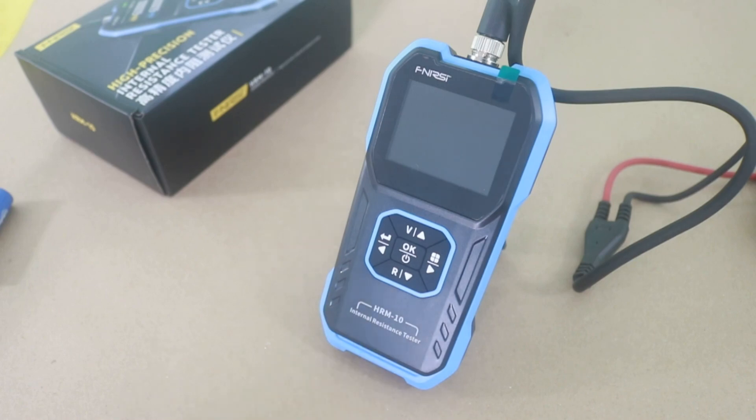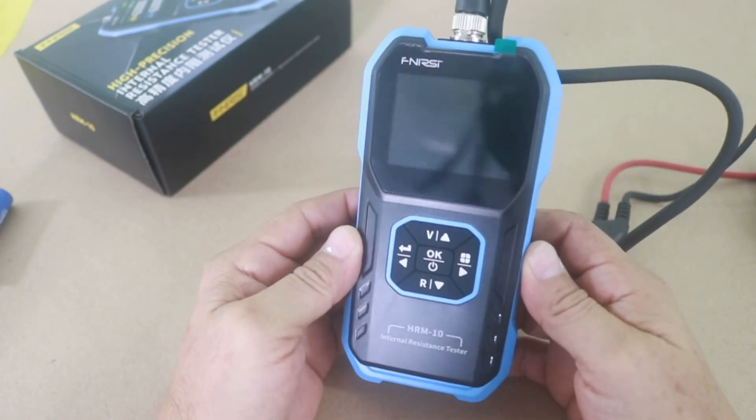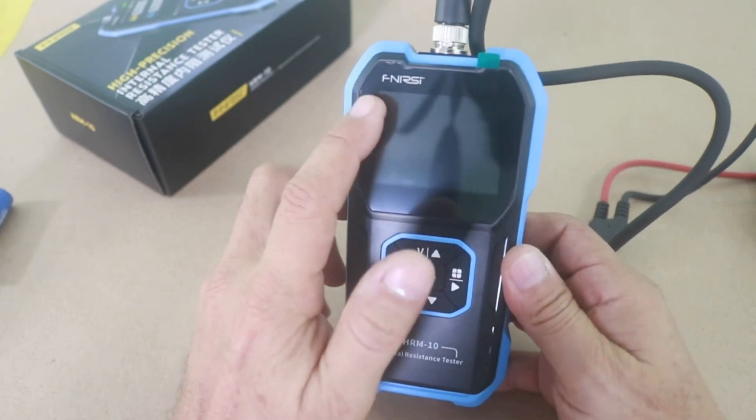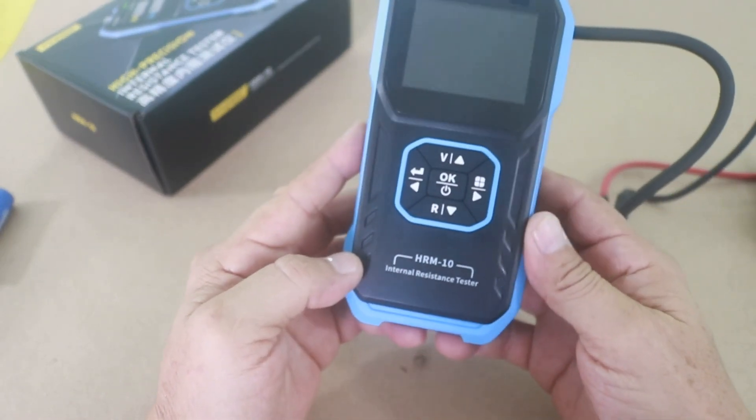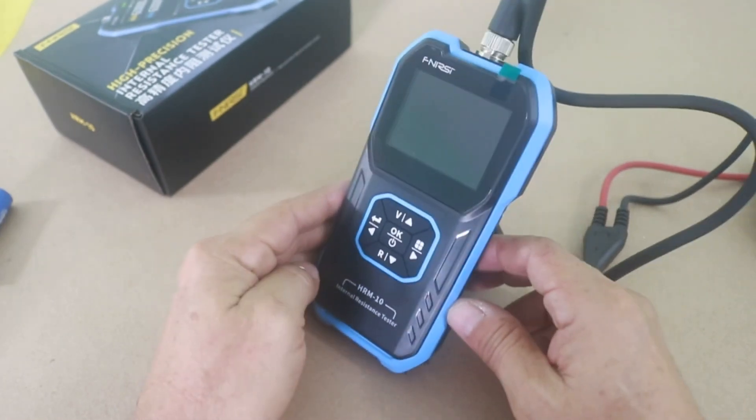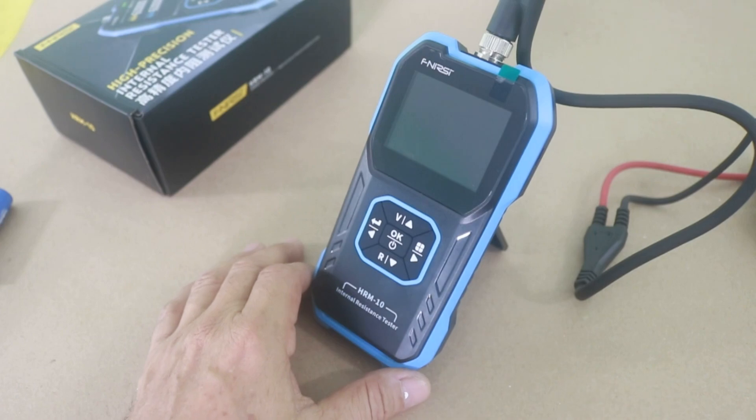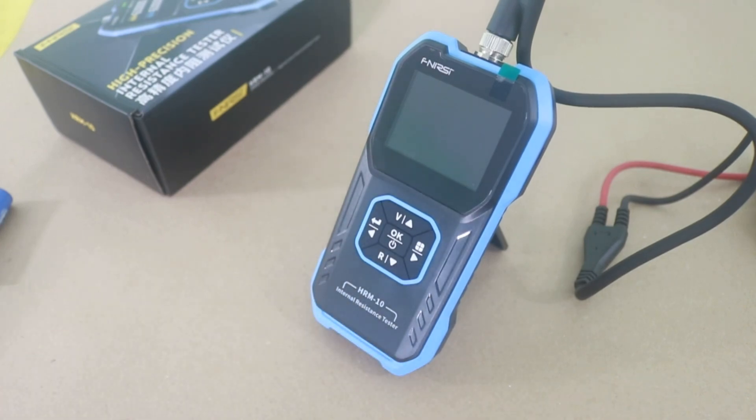Okay. There you have it. Internal resistance measurement apparatus. FNIRSI model HRM10. In the description of the video there is a link where you can check and buy this device. Hope you liked this video. Thanks for visiting my channel and see you in the next one.